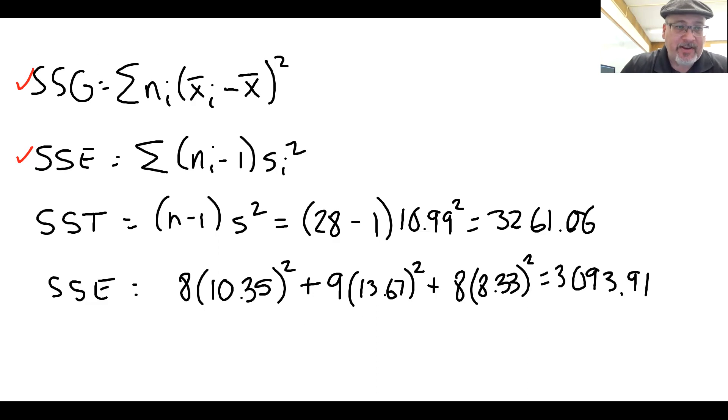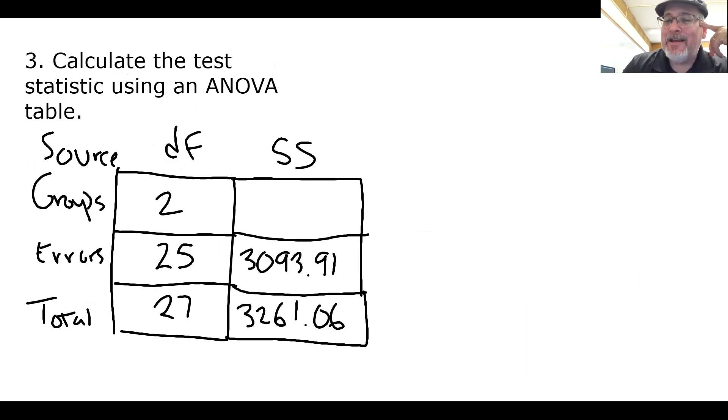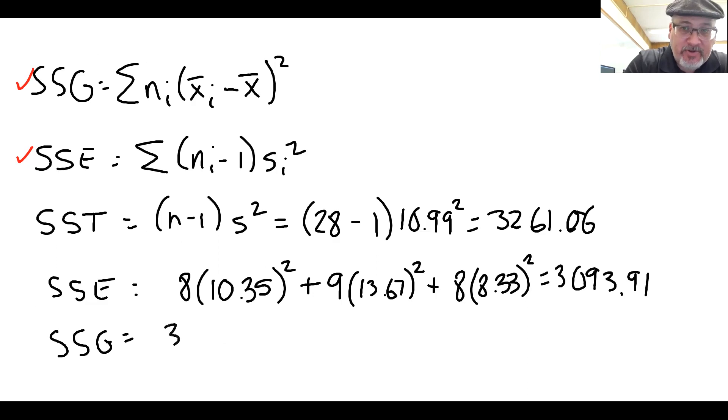So to calculate the SSG, we can take advantage of the fact that this column is additive, meaning that the top two values have to get the third one. So we can just subtract the two values that we currently have: 3,261.06 minus 3,093.91 equals 167.15.